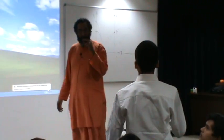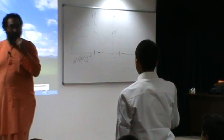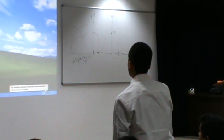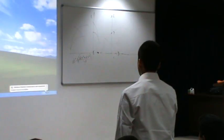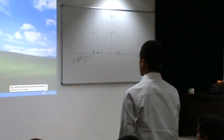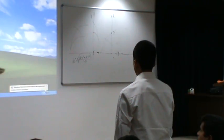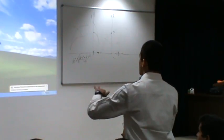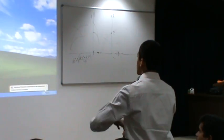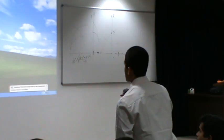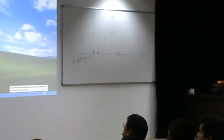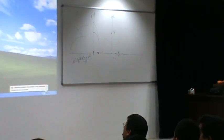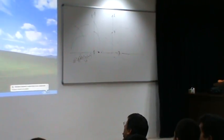Why restrict to y > 0? From the formula, as y → 0 the metric blows up — there is a singularity at y = 0. You could keep y < 0, giving two separate pieces — top and bottom half-planes — but they do not communicate: you get geometry on top and geometry on the bottom as parallel universes.